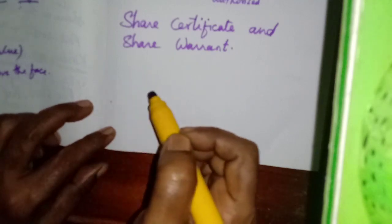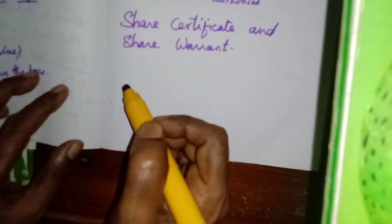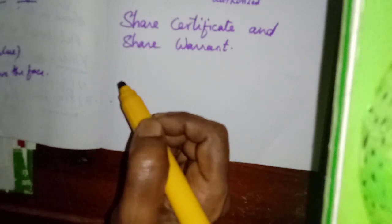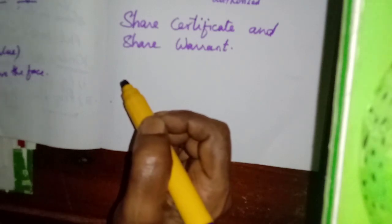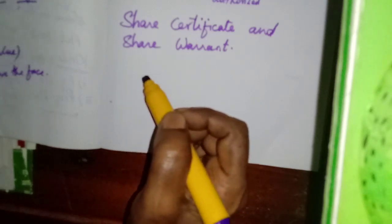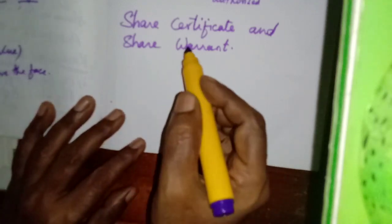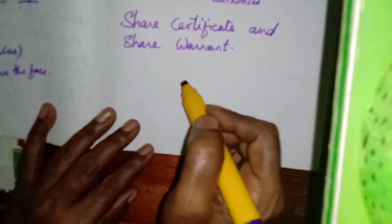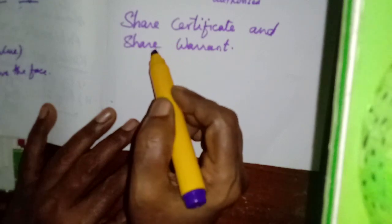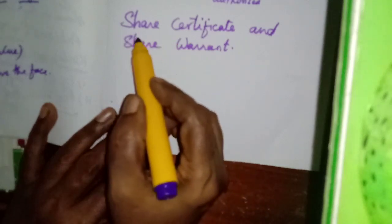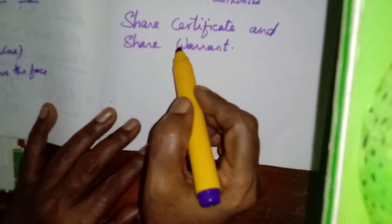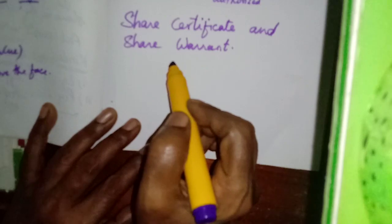The company site. In the last class we studied the kinds of preference shares, when shares can be issued at discount, and many kinds of shares. Now let us learn about share certificate and share warrant.